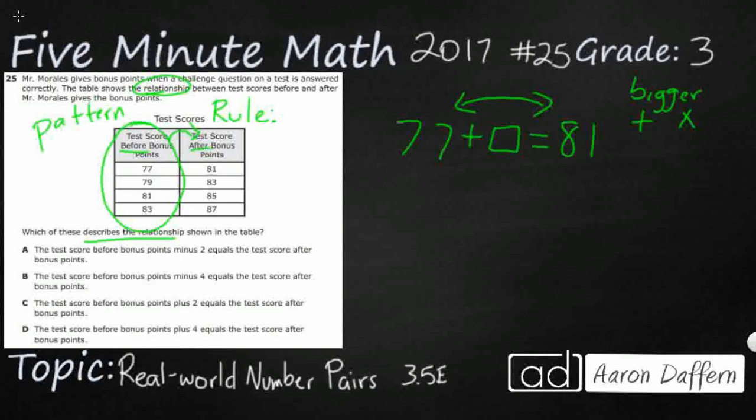Well, we've got two options. We can use an inverse operation and find a related subtraction fact. That would work just fine. So that's going to be 4. Or we can simply just count on. Start at 77 and then count on to 81 and see how many numbers we say. 78, 79, 80, 81.